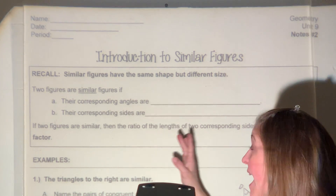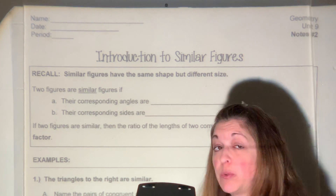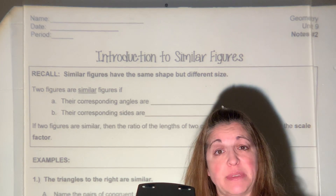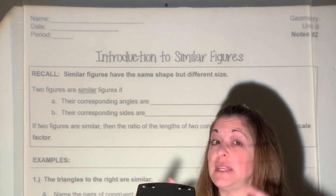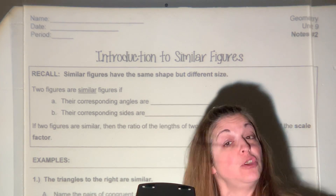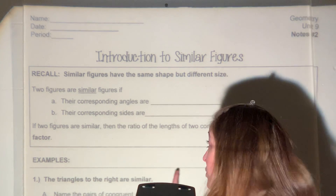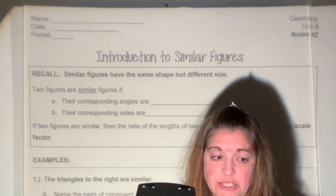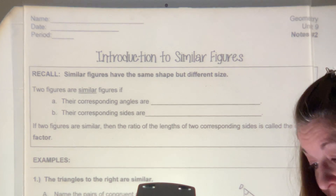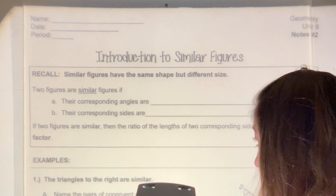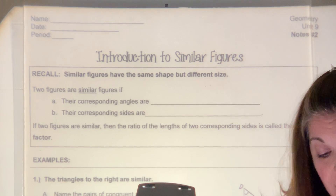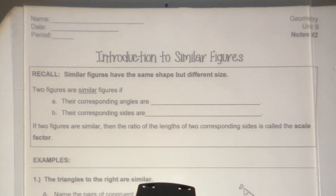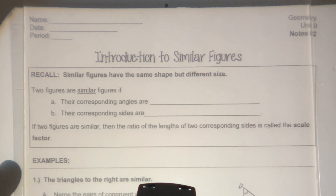If you remember, we actually worked with similar figures before — that was when we were doing dilations. We had the pre-image and then we used a scale factor to make it either larger or smaller, and it created that new image. Those two figures we said were similar. Remember that the blank copy of these notes can be printed from our Google Classroom page. If you don't have access, we still suggest you take down notes on notebook paper because you can use them for any Edgenuity quizzes or tests.